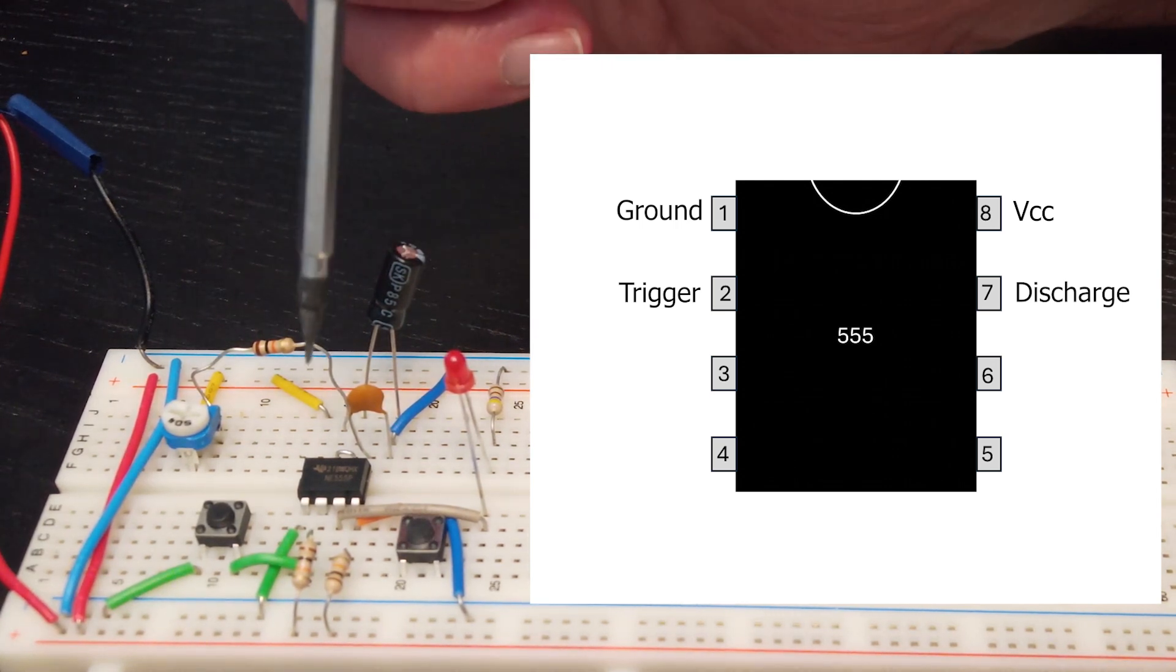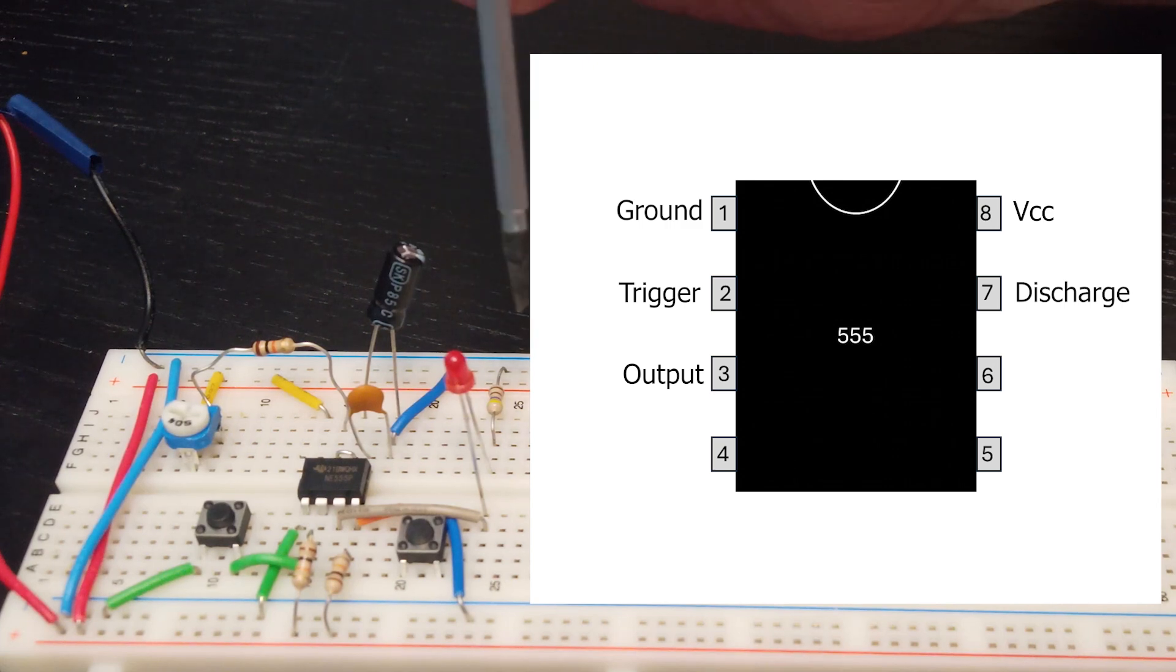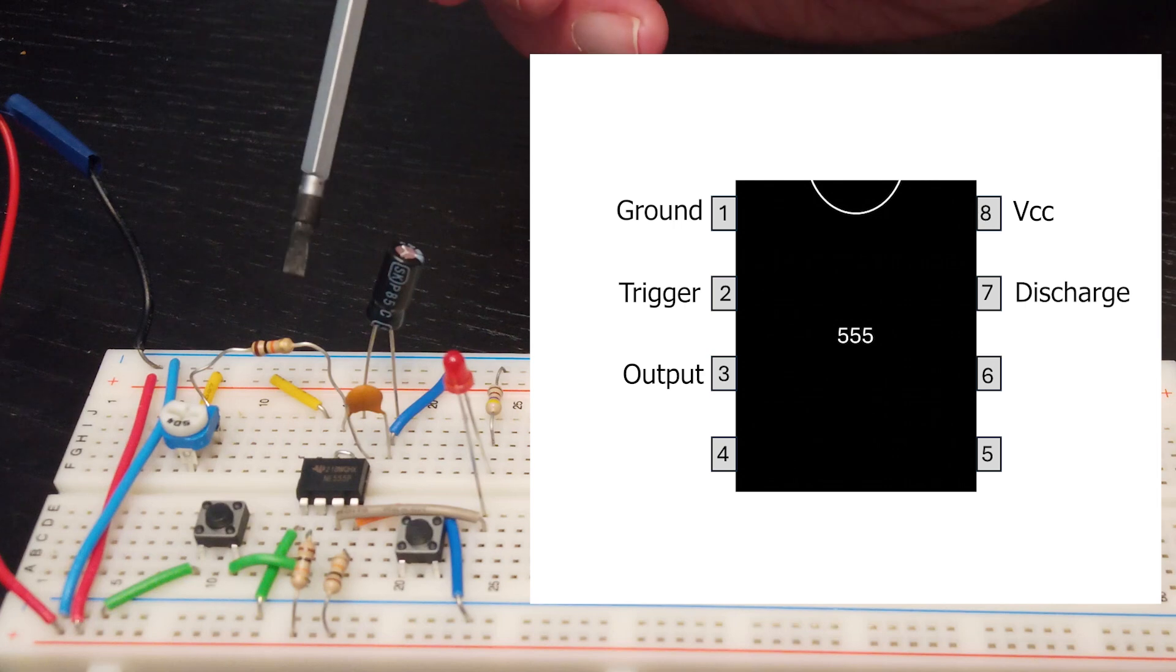So when the circuit is triggered two things will happen. First, the output pin which is pin three will be driven high. Now in this book circuit that pin is connected through an LED and then a current limiting resistor to ground, so the effect of that pin being driven high will be that the LED will light. So the second thing that will happen when the trigger pin is driven low is that the discharge pin, pin seven, is disconnected from ground. So there's no longer a discharge path for the capacitor resistor and as we've already seen in earlier circuits, the capacitor will begin to charge at a rate dependent on the value of the resistor.